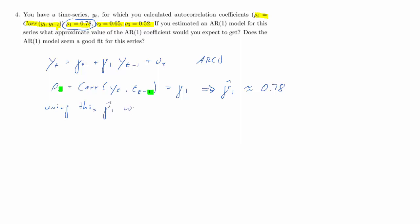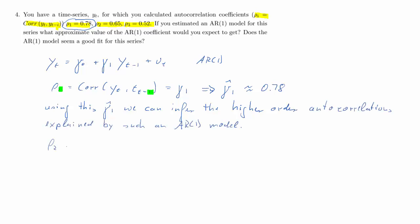Once we have a value for gamma 1 hat, we can use it to infer what higher-order autocorrelations this AR(1) process implies. The second-order autocorrelation — the correlation between yt and yt minus 2 — in an AR(1) process ought to equal gamma 1 hat squared. In our case, that's 0.78 squared, which equals 0.6084.